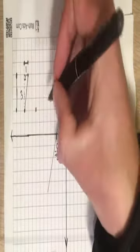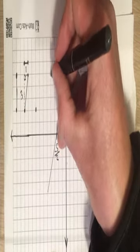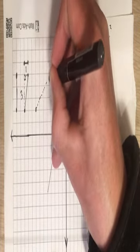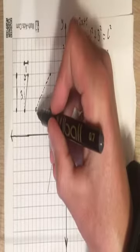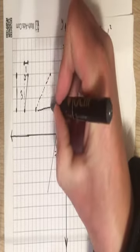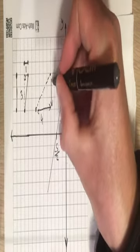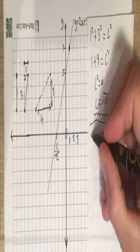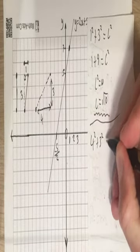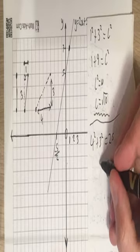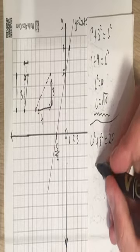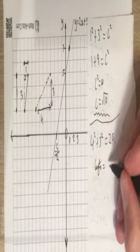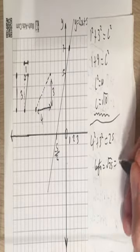Any two points in the world: I want to find the length between them. Count across — that's 4. Count up — that's 3. Use Pythagoras: 4 squared plus 3 squared equals 25. The length equals the square root of 25, which is 5.